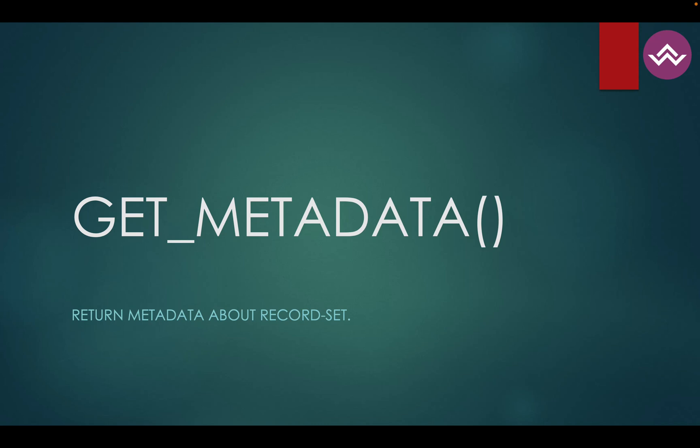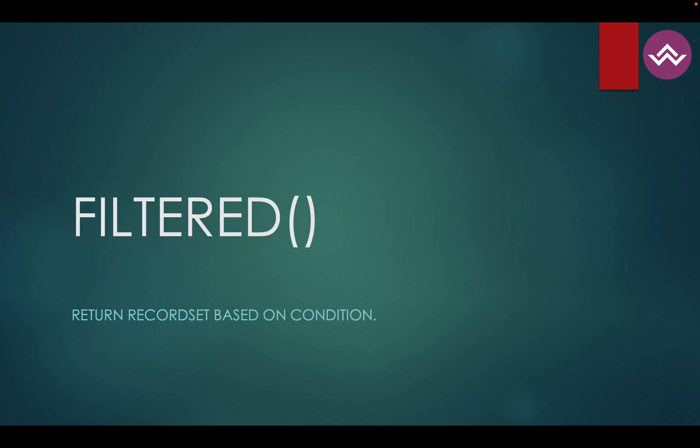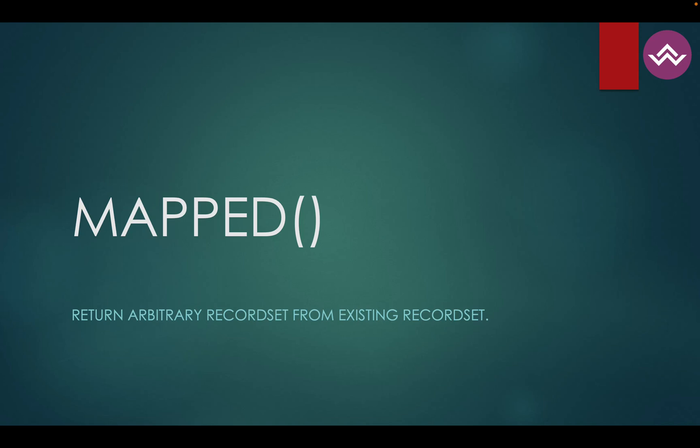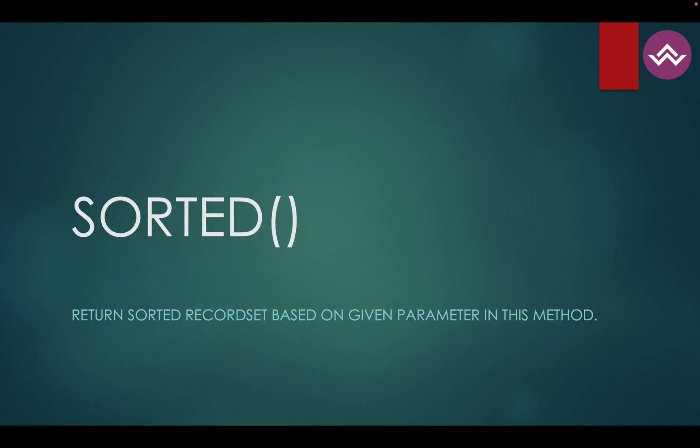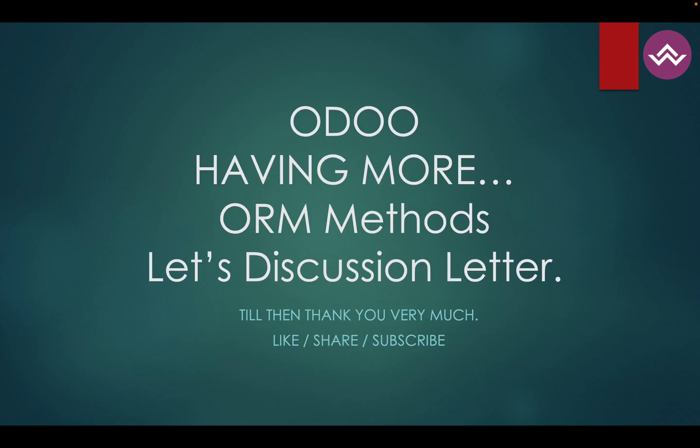The filtered method is useful when you already have a record set and want to further filter it — instead of querying the database again, it filters from the existing record set, which helps optimize your code. The mapped method is used to retrieve specific field values from a record set. The sorted method sorts the record set in ascending or descending order based on your condition, and it has been improved since version 17.